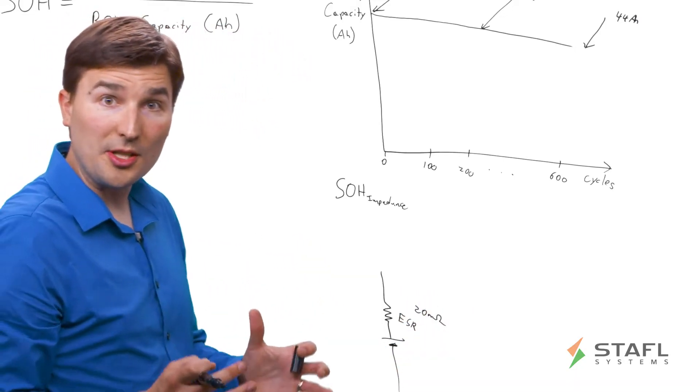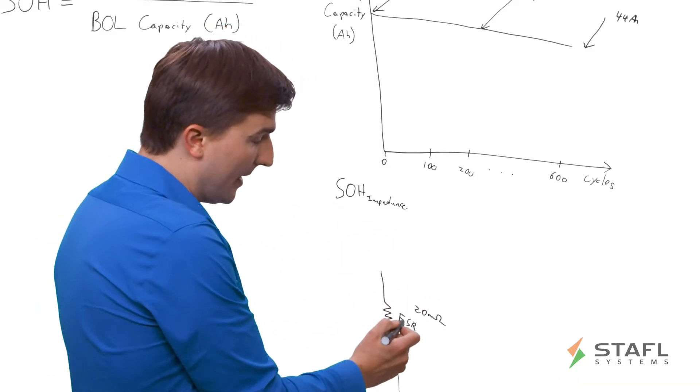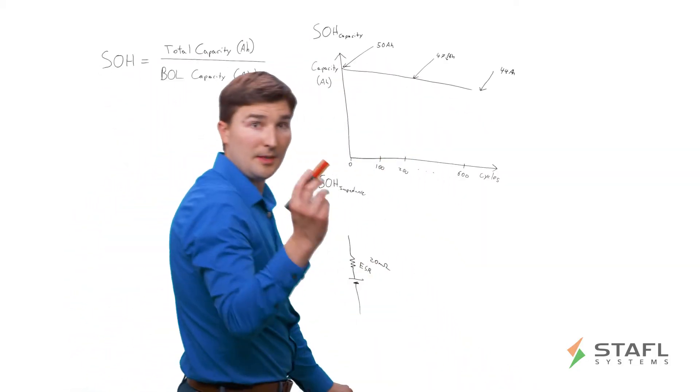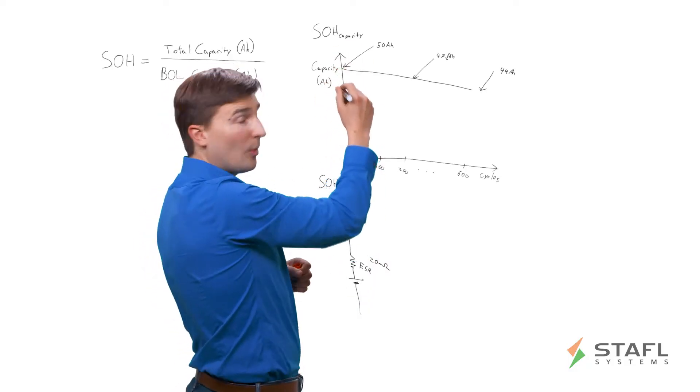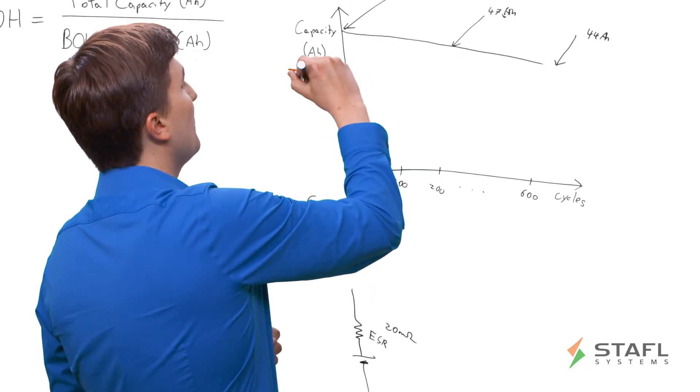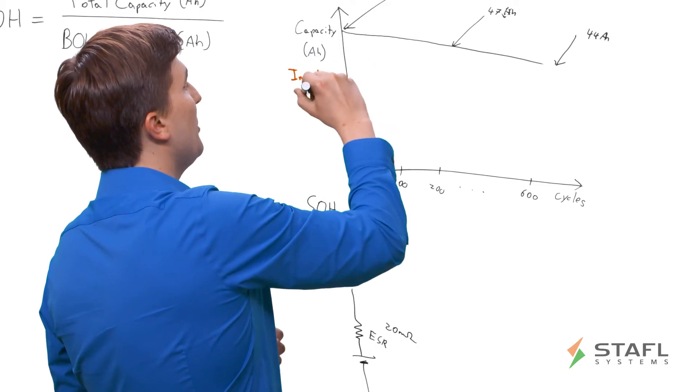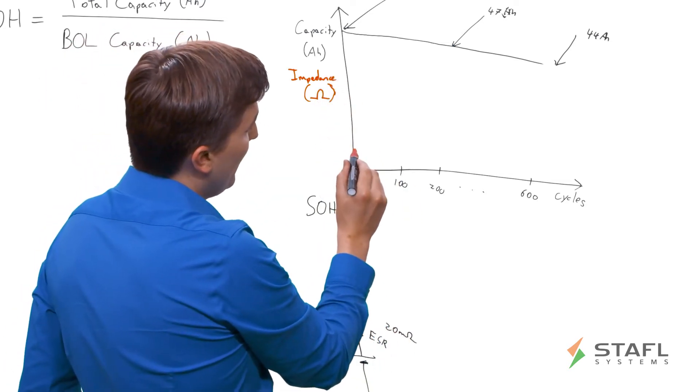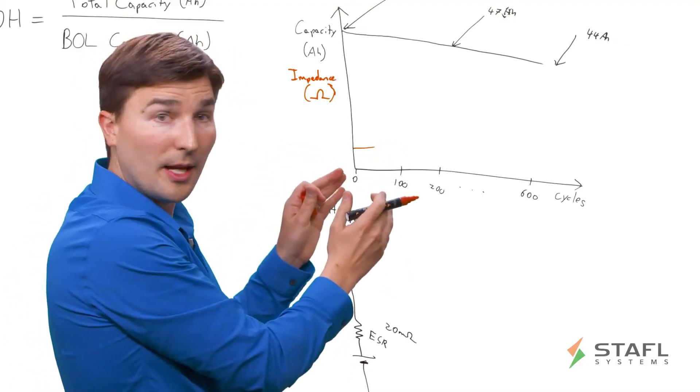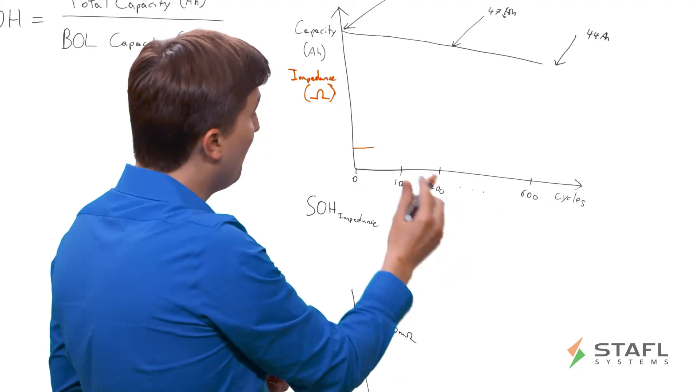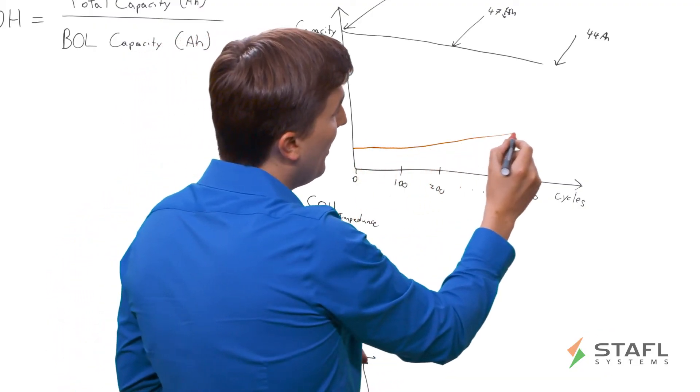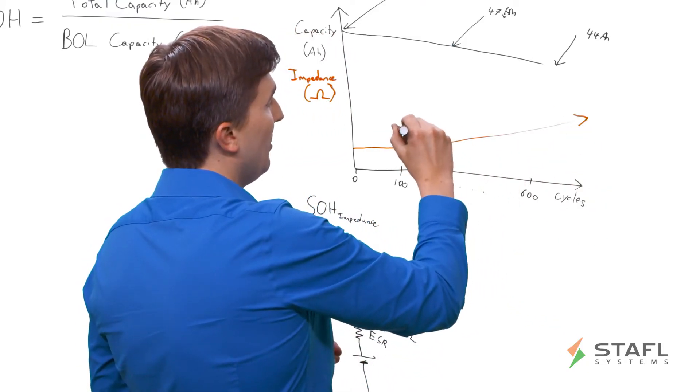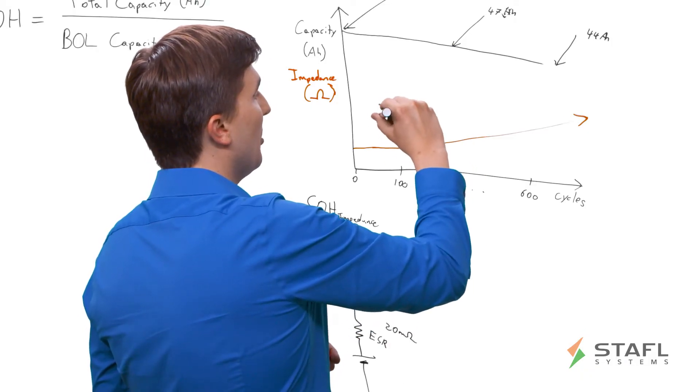Now, over time, as you charge and discharge that battery, you will expect that this ESR, or Equivalent Series Resistance, will increase over time. So I'm going to switch to a different color here, to red. And now in red, the y-axis is going to refer to impedance. And this is given in units of ohms, or milliohms, depending on the scale. So what you would expect to see is you would start with a relatively low impedance at the beginning of life. But as you charge and discharge the cell, your impedance will start to grow. And this is called impedance growth.